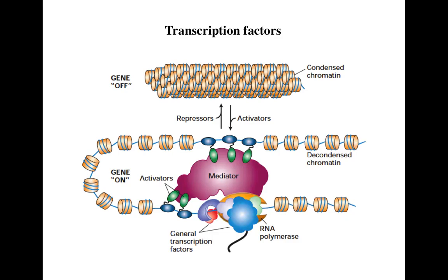After condensation by repressors, these mediator proteins, activators, and general transcription factors cannot bind to their regulatory sequences because these sequences become hidden inside the condensed chromatin. So the first thing needed for a gene to be expressed is to expose the regulatory sequences so that different molecules involved in initiation of transcription can bind to them. Activators relax the chromatin and up-regulate transcription, while repressors can inhibit RNA polymerase binding, inhibit transcriptional activity, and condense the chromatin to turn genes off.